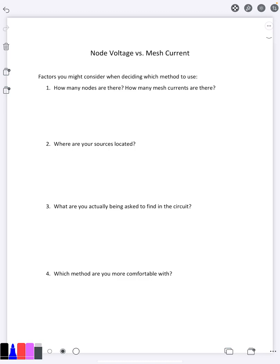First things first, you want to look at how many nodes there are and how many mesh currents there are. Remember that if you use node voltage technique, the number of variables is equal to the number of nodes minus one. It's always minus one because one becomes ground when you set to zero. On the other hand, the mesh current technique, the number of variables is just equal to the number of mesh currents.